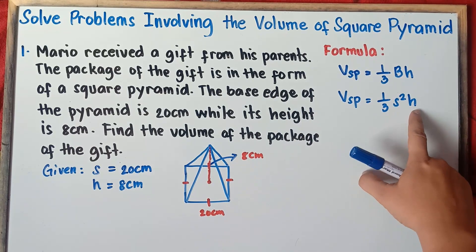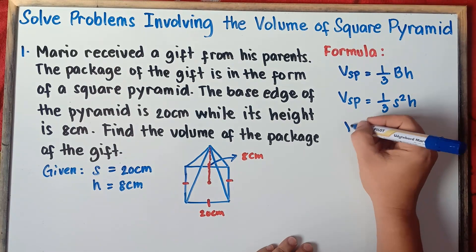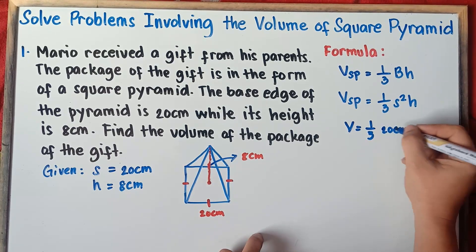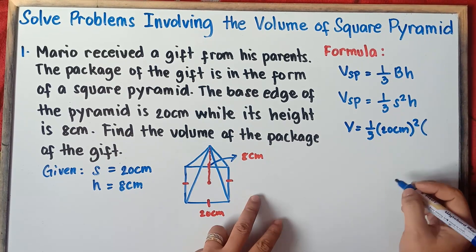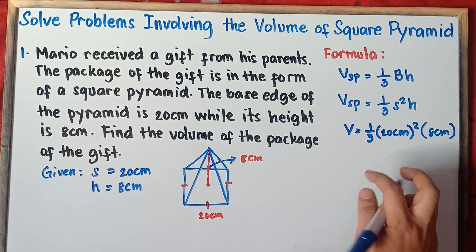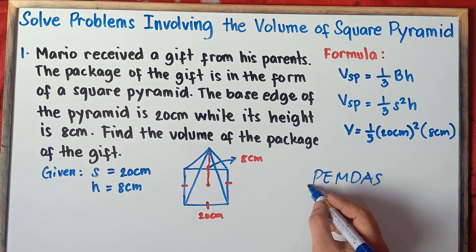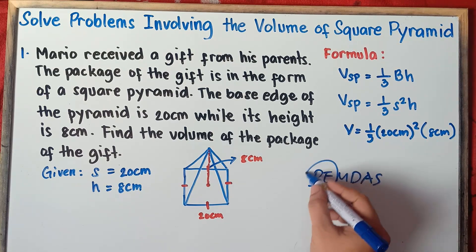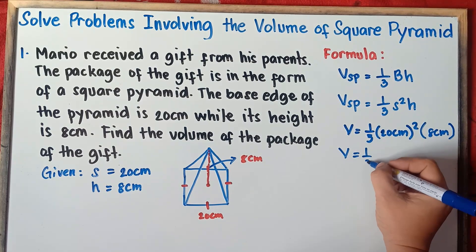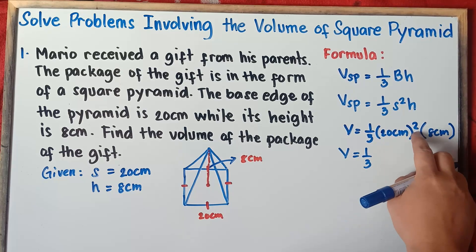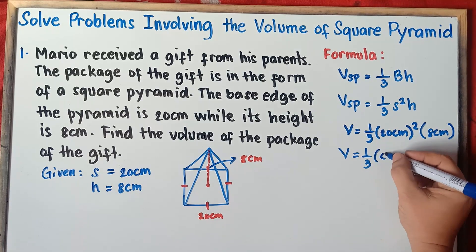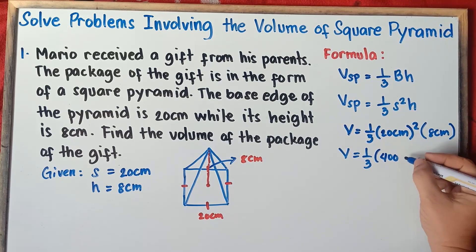Let's use the second formula and substitute the values. The volume is equal to one-third times 20 centimeters squared times 8 centimeters. Simplify the squared term first — always follow PEMDAS: parentheses and exponents come before multiplication. So 20 squared means 20 times 20, which equals 400. Centimeters times centimeters gives centimeters squared, because you copy the base unit and add the exponents: 1 plus 1 equals 2. So we have one-third times 400 cm² times 8 centimeters.